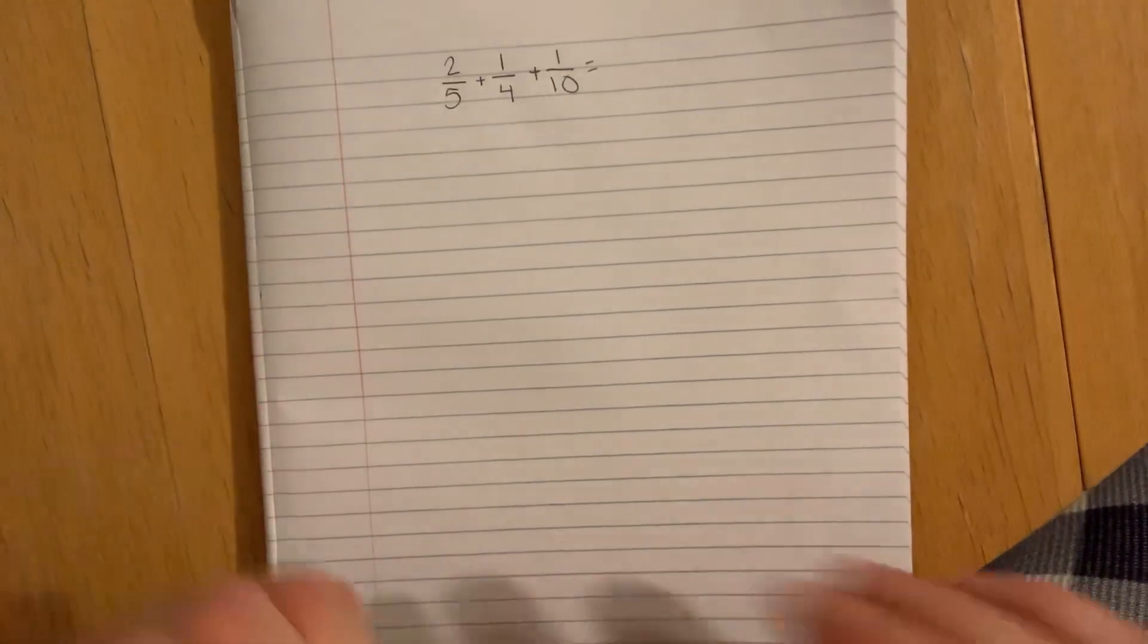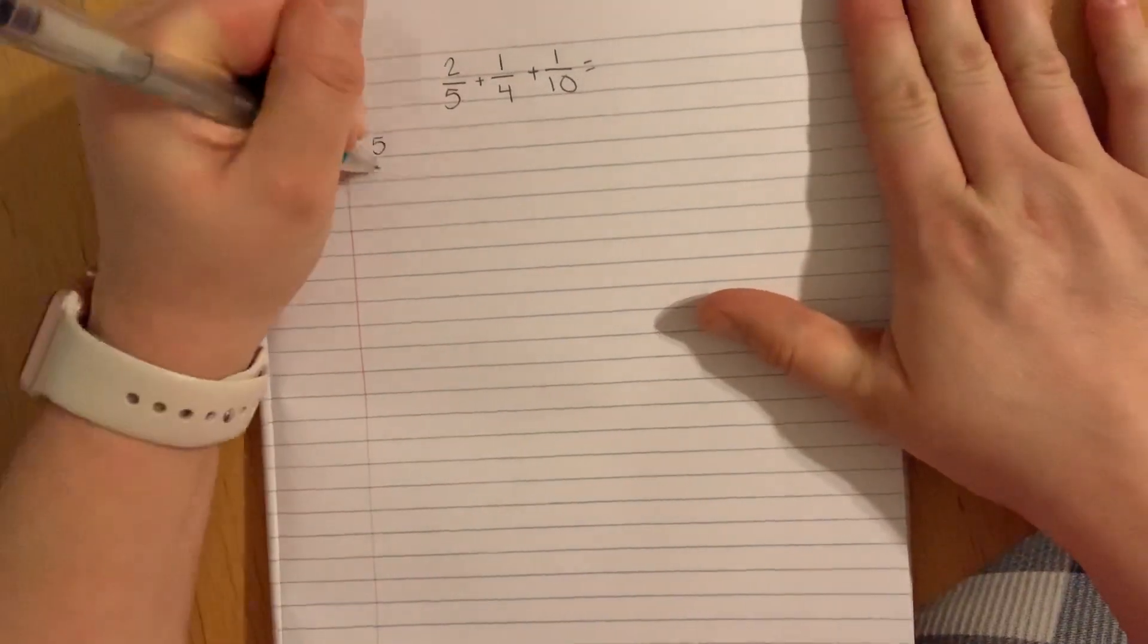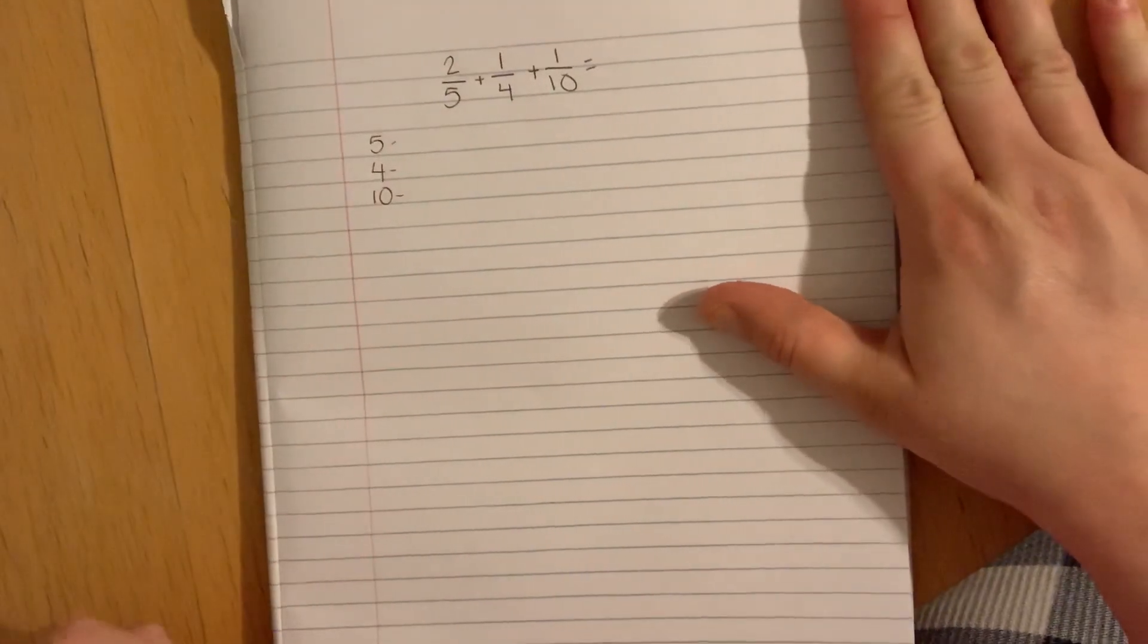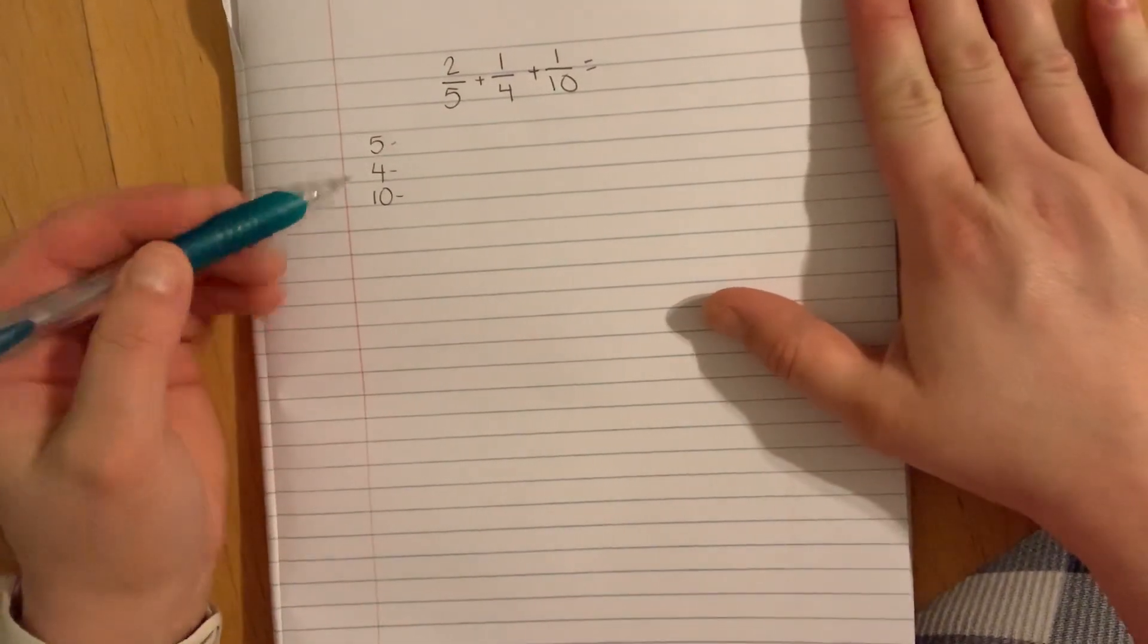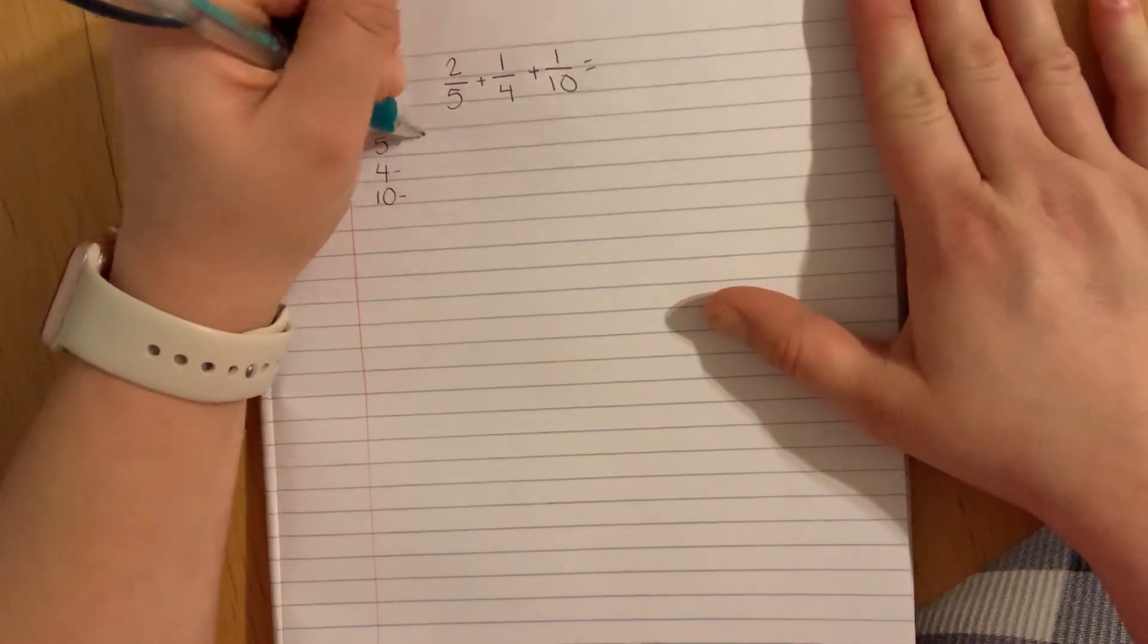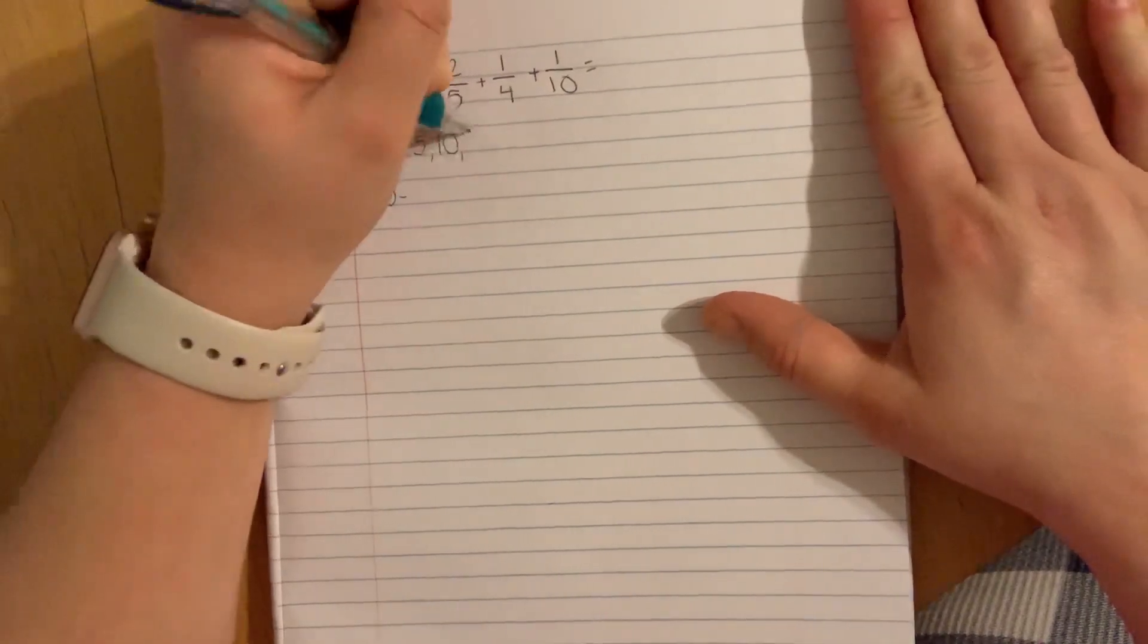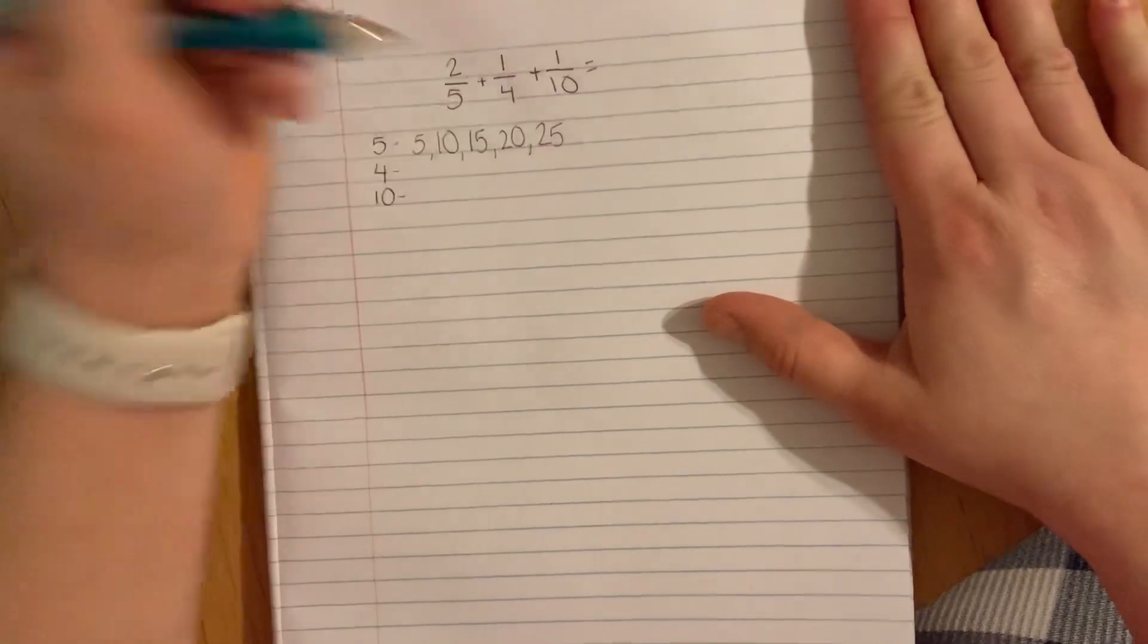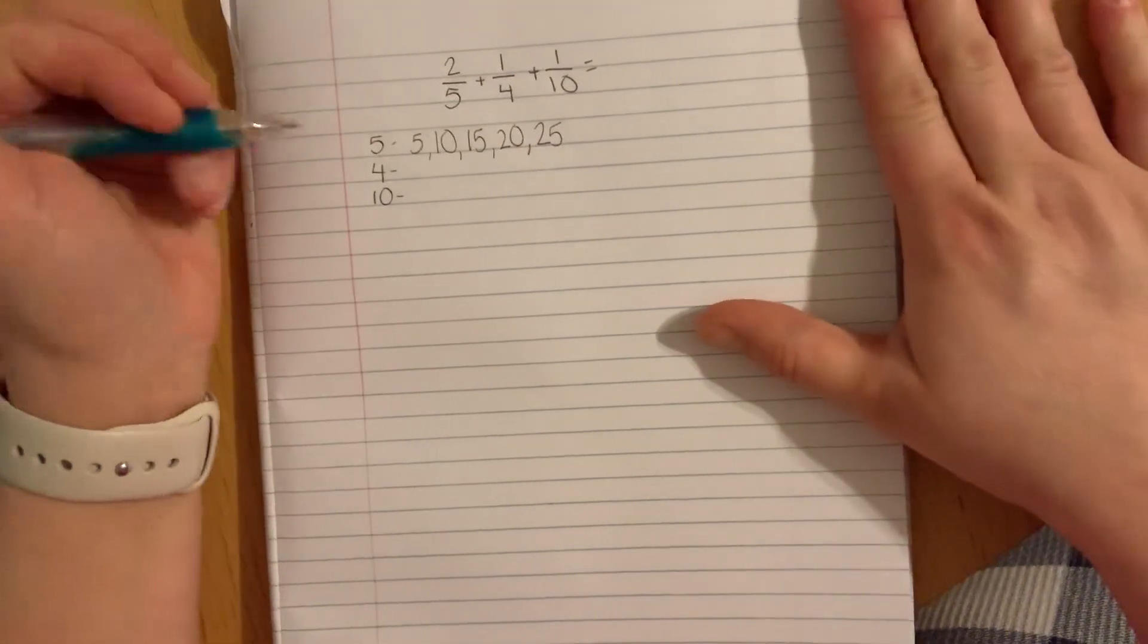We have 5, 4, and 10. I'm going to write 5, 4, 10 and skip count by both 5, 4, and 10. I'm going to go 5, 10, 15, 20, 25. I'm just going five times with each number.